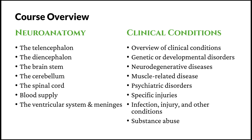Then we will have two specific parts: one about neuroanatomy and the other about clinical conditions. In neuroanatomy, we will learn about the different parts of the nervous system, including the telencephalon, the diencephalon, the brainstem, the cerebellum, the spinal cord, the blood supply, and the ventricular system and meninges.